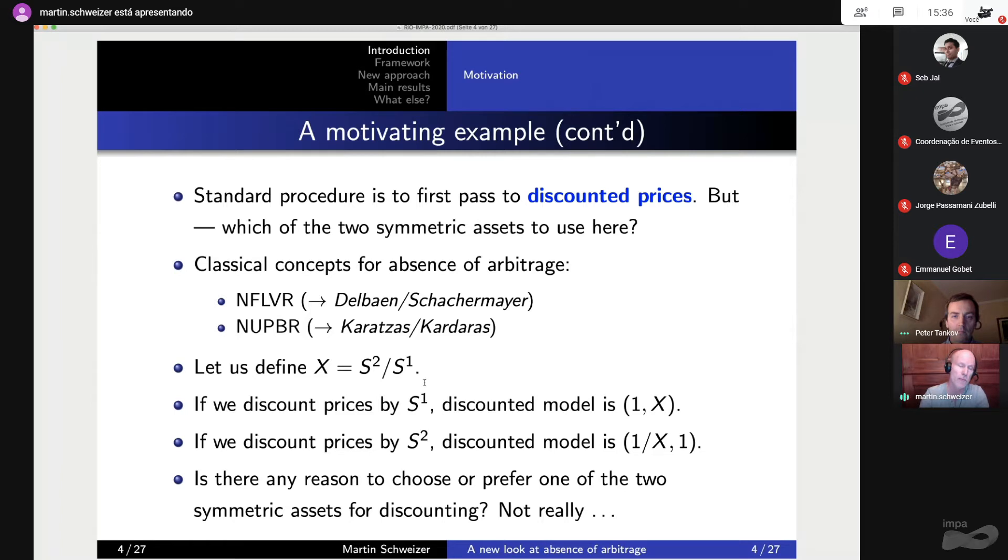So let's have a look at this here. So let's just say x, this is the ratio S2 over S1. Okay, now if we use our first geometric Brownian motion to discount assets, then the discounted model is 1 in coordinate 1 and x in coordinate 2, because we divide everything by S1. And if we discount the prices by S2, then the discounted model is simply the reciprocal of x in the first coordinate and 1 in the second coordinate. And again, is there any reason in this very symmetric model to choose or to prefer one of these two assets for discounting? Not really.